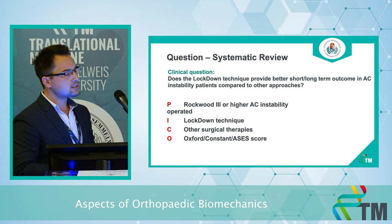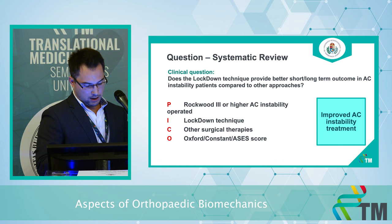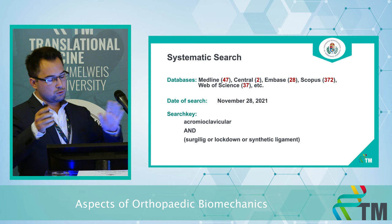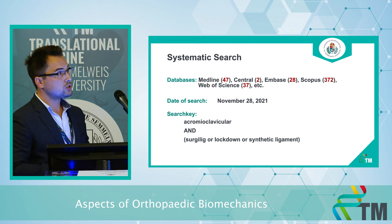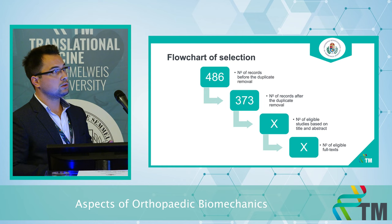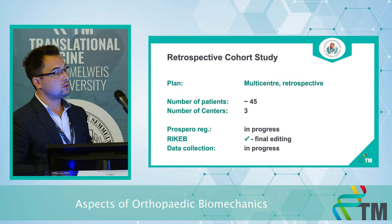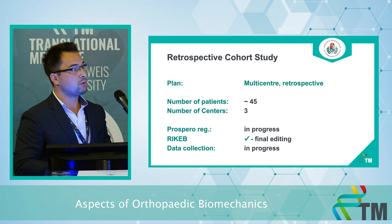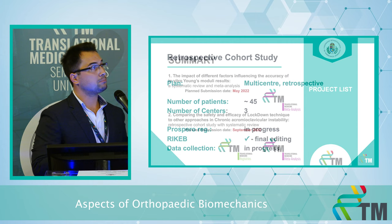With this, we believe we can improve the treatment of AC instabilities. We have two parts: one is the systematic search, which we conducted not long ago in five big databases with these search keys. We acquired approximately 500 records, and with duplicate removal we could remove approximately 100 records — and this is where we are right now with the systematic search part. The other part is a multi-centered retrospective cohort study. Our plan is to have approximately 45 patients from three centers, and we are just about to finish the REC approval.